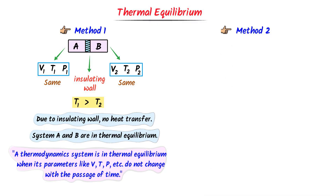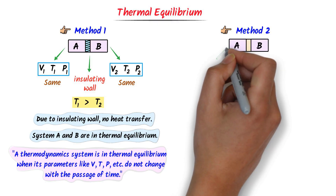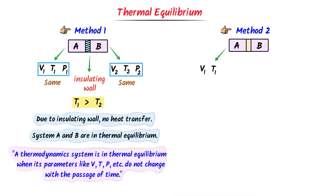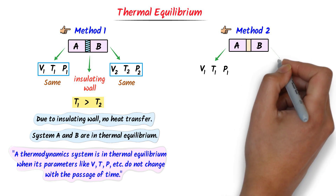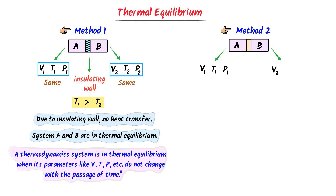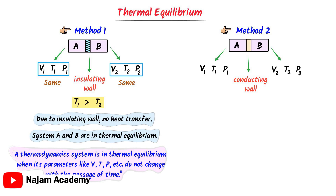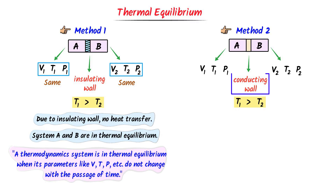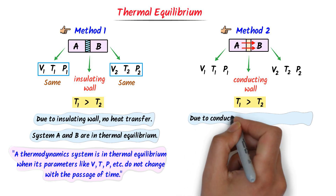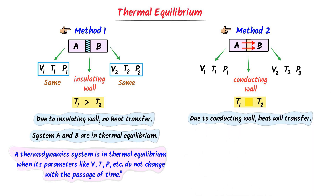Now let me teach you the second concept of thermal equilibrium. Consider two thermodynamic systems, A and B. Let the volume of system A be V1, its temperature T1, and its pressure P1. Let the volume of system B be V2, its temperature T2, and its pressure P2. Now there is a conducting wall between these two systems. Let the temperature of system A, T1, be greater than T2. Since the temperatures differ, this conducting wall will allow heat to transfer from system A to system B. Heat will transfer between the two systems until both systems have the same temperature.